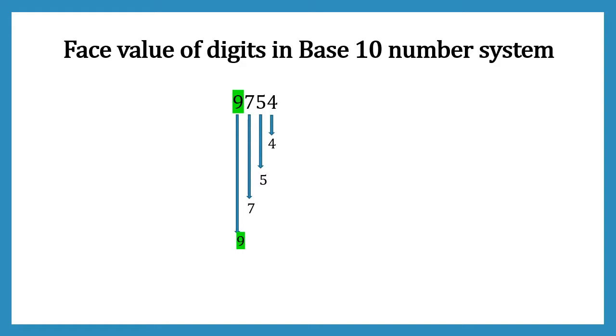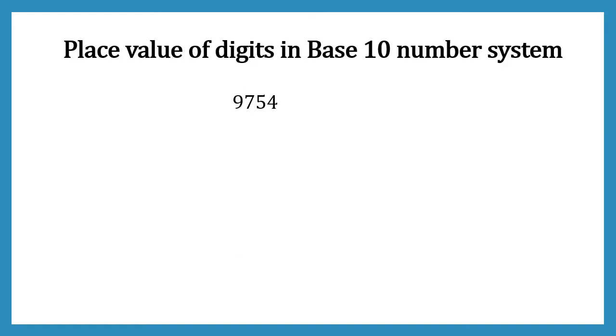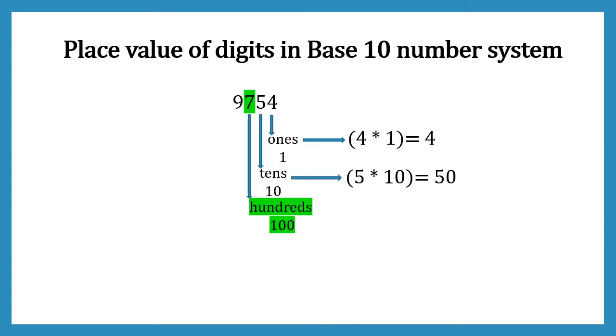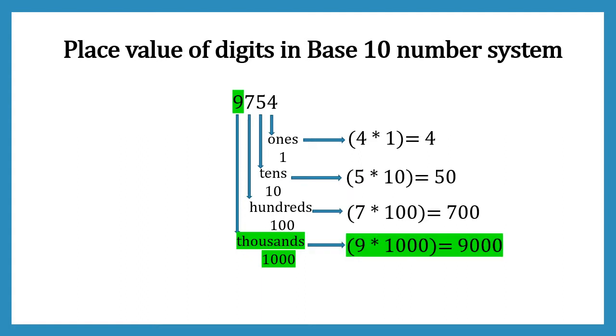Now we are done with face value. It's time to look at the place value. Place value depends on placing of the digit in a number. 4 is at 1's place, so its place value will be 4 into 1 which is 4. 5 is at 10's place, so its place value will be 5 into 10 which is 50. 7 is at 100's place, so its place value will be 7 into 100, which is 700. 9 is at 1,000's place, so its place value will be 9 into 1,000 which will be 9,000.